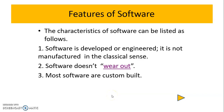In this video, we will see the features of software, or what we call the characteristics of software. The first characteristic is that software is always developed or engineered, but we are not going to manufacture it in the classical sense. That means we are not going to manufacture software the way we manufacture hardware components. It is always developed or engineered.